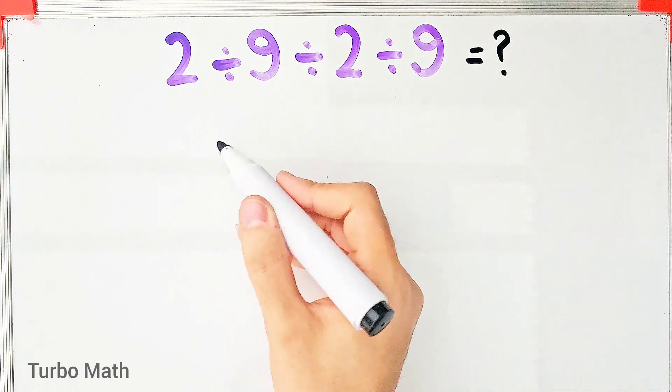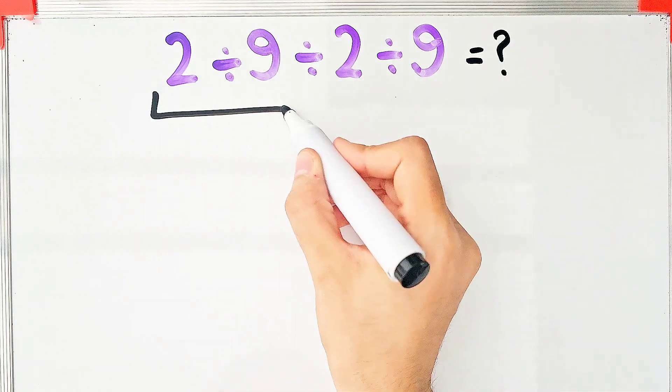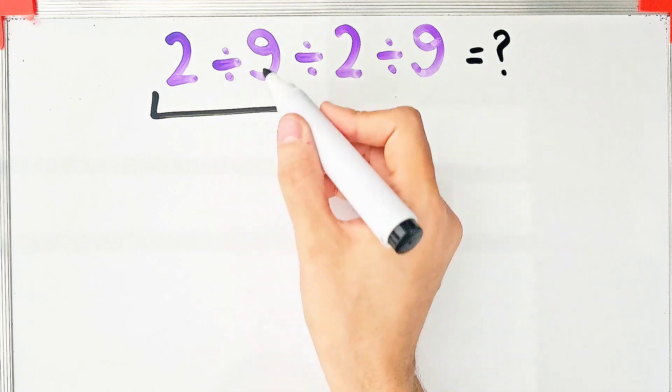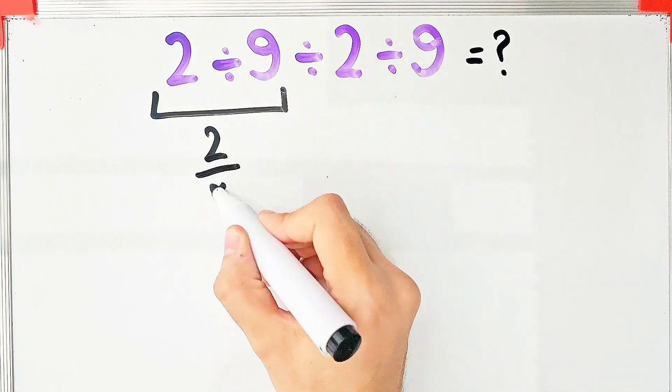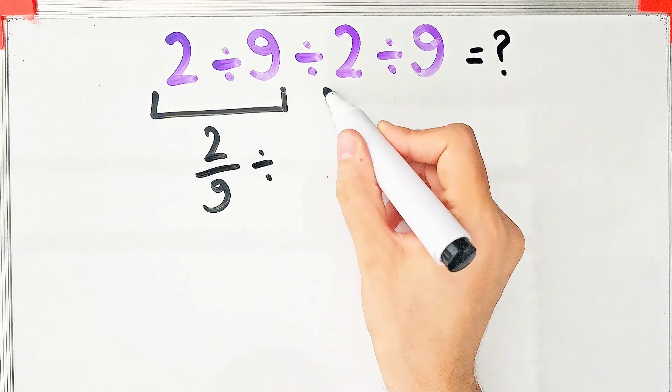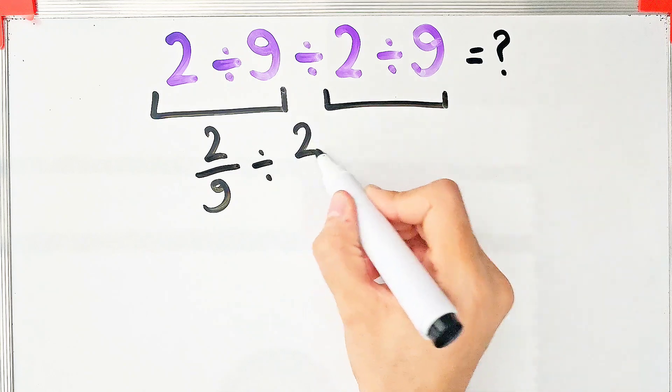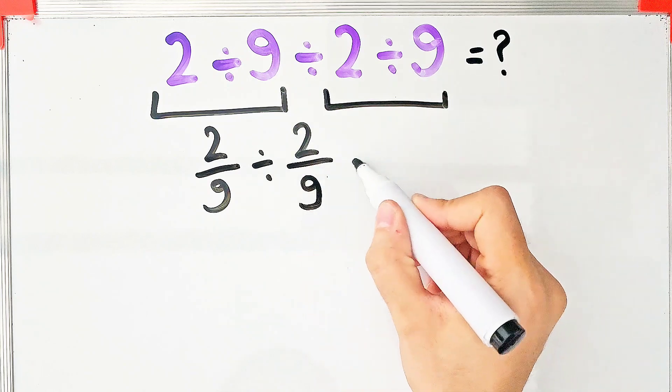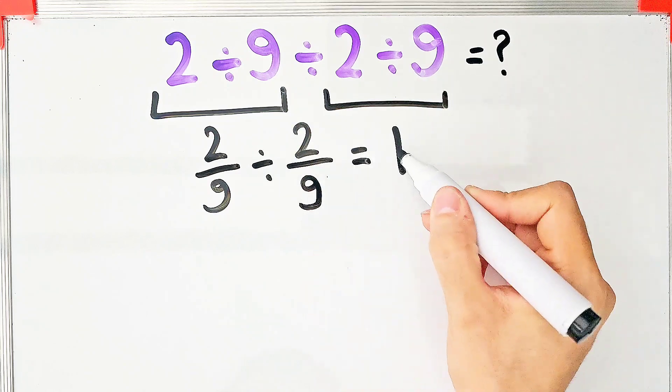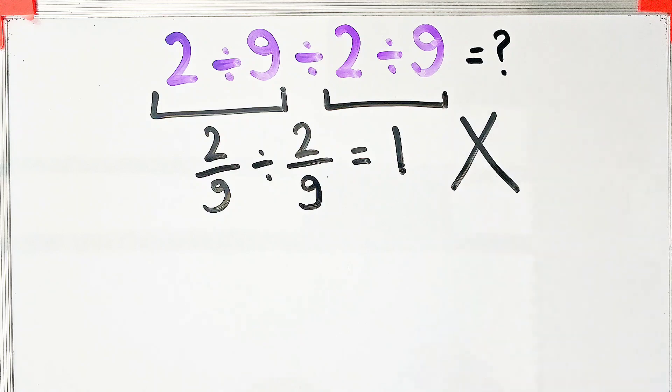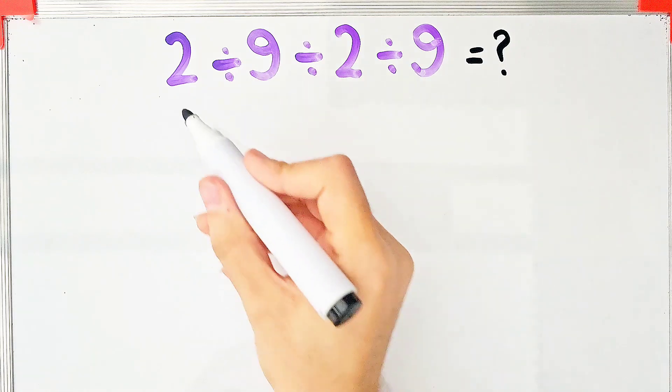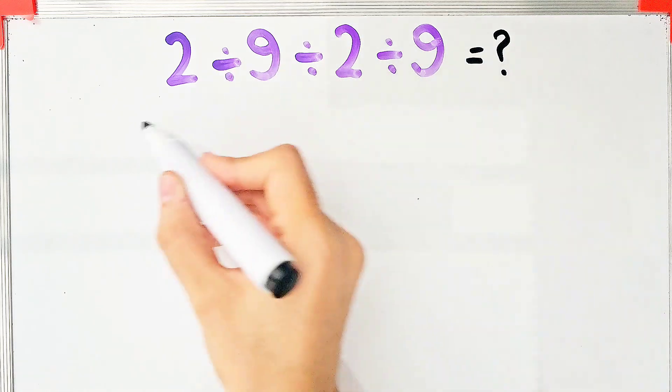In the wrong way of solving this question, some people solve it like this: 2 divided by 9 equals 2 over 9. After that, they do this division 2 divided by 9 equals 2 over 9, and they say the final answer equals 1. But this answer is definitely wrong.